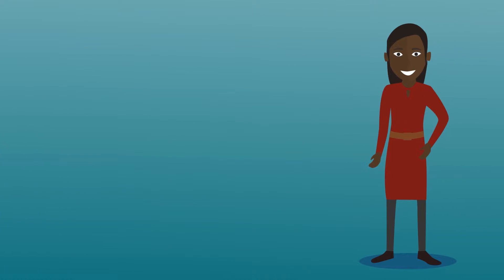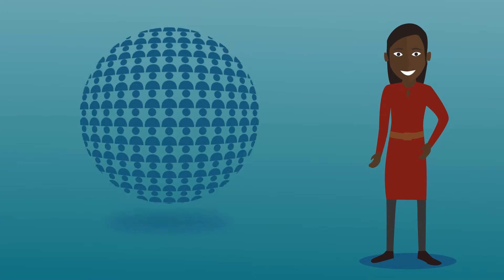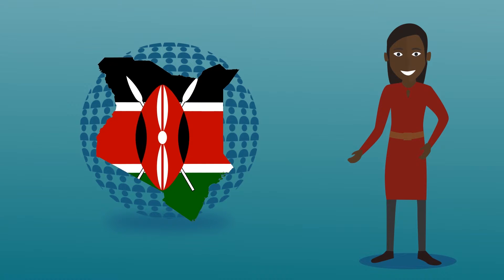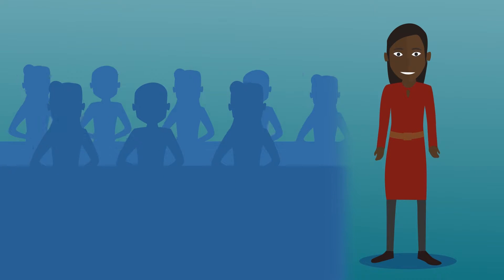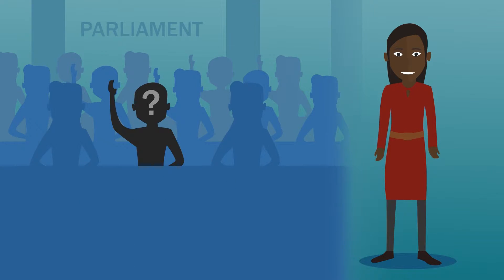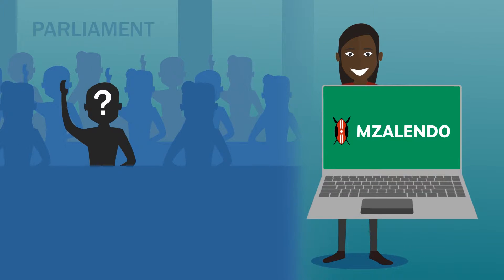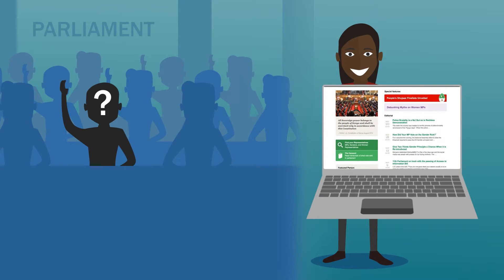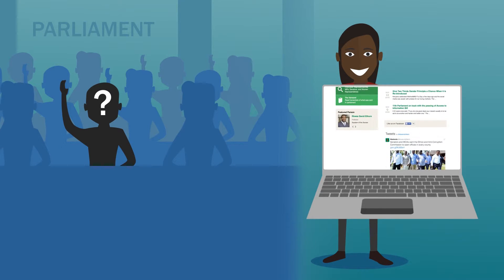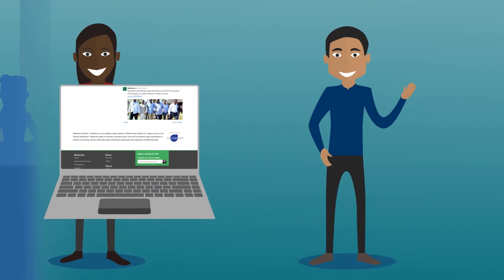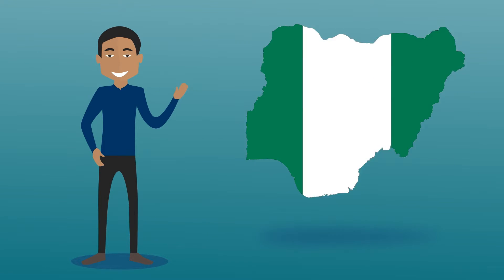Jessica, meanwhile, runs a community campaign group in Kenya. She needs to know who her MPs are and how to petition them. Mzalendo provides information on MPs, their voting patterns and contact details, allowing Jessica to better target her campaign.